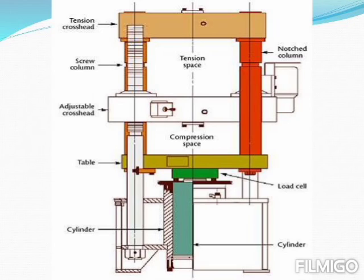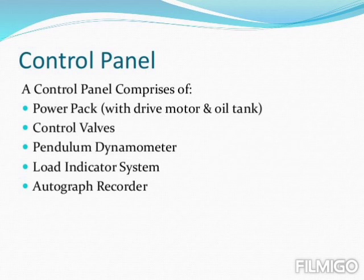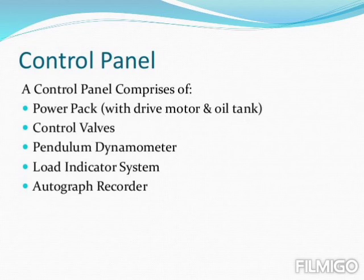Here is a clear picture of a universal testing machine. The control panel comprises a power pack with a drive motor and oil tank. It also has control valves, a pendulum dynamometer, a load indicator system, and an autograph recorder.